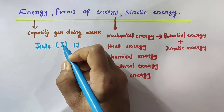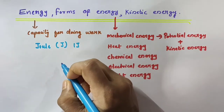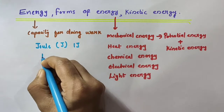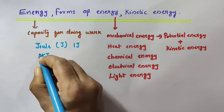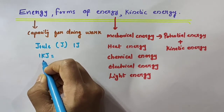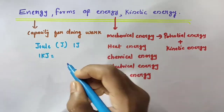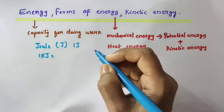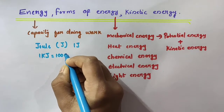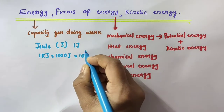So the S.I. unit of energy and work are both Joule. A larger unit of energy is Kilojoule. 'Kilo' always means 1000 — just as 1 kilogram equals 1000 grams and 1 kilometer equals 1000 meters, similarly 1 Kilojoule equals 1000 Joules, which can be written as 10 raised to 3 Joules.